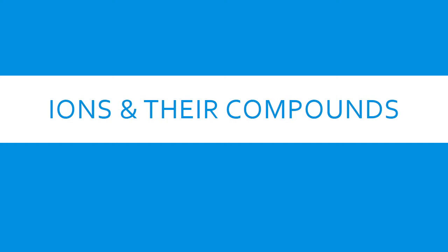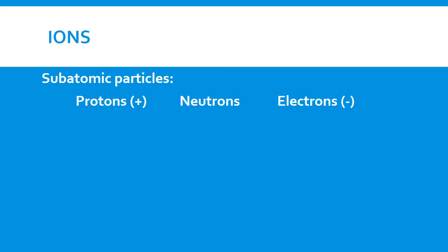Hello students, Mr. Courtney here. Today we're going to be talking about ions and their compounds. Thinking about subatomic particles, we have positively charged particles called protons, neutrons which do not have a charge, and electrons which are negatively charged.